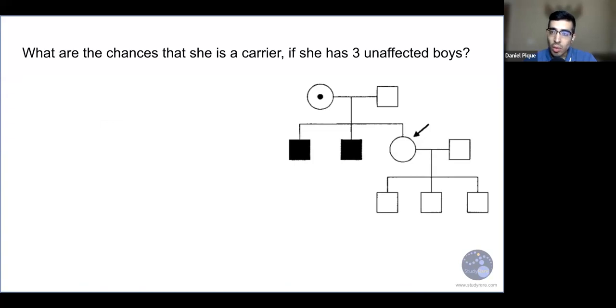Okay, now I'm going to ask a slightly different question. Same pedigree, but let's say that this woman has three unaffected boys. So we see the same woman here and her three unaffected boys here. Now, what are the chances that she's a carrier? Not quite as straightforward. So take a second to think about how you might calculate this probability.